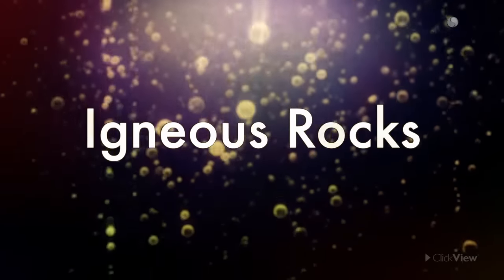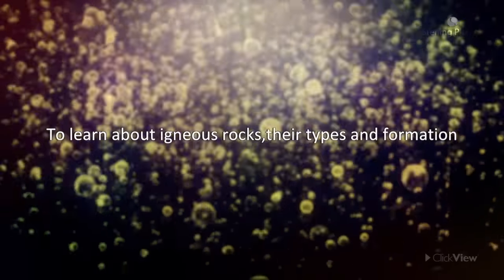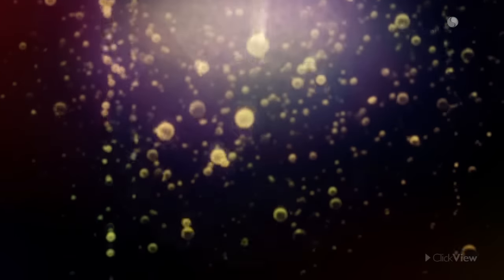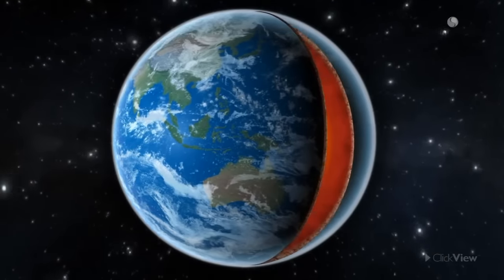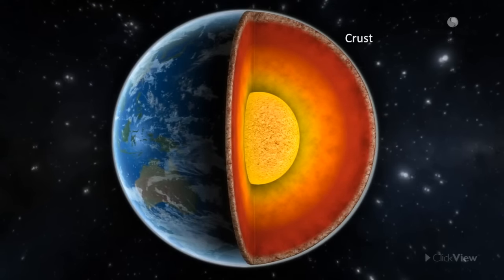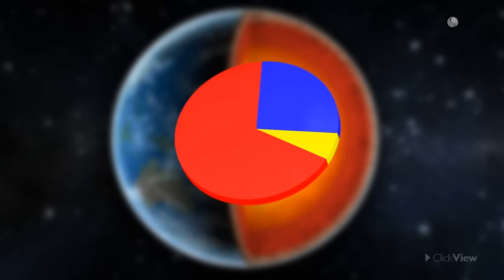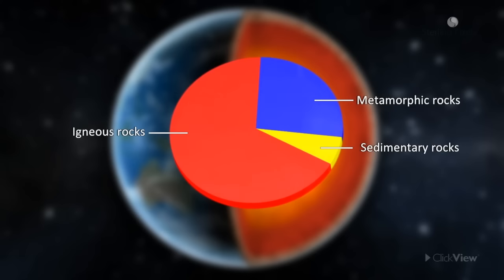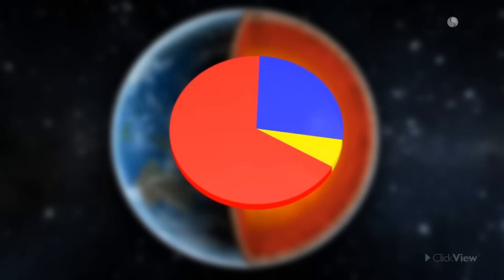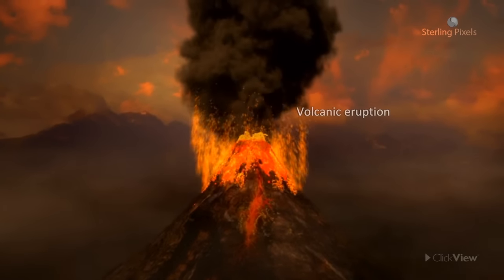Igneous rocks — objective: to learn about igneous rocks, their types, and formation. The earth's crust is made up of different types of rocks. The rocks which make up the maximum volume of the earth's crust are called igneous rocks. The word igneous has been derived from the Latin word 'ignis,' which means fire. These rocks are associated with volcanic eruptions.